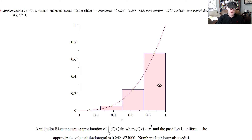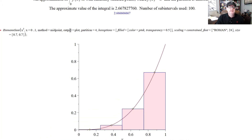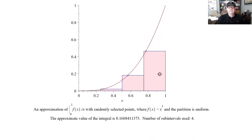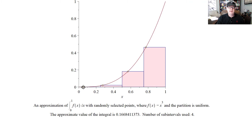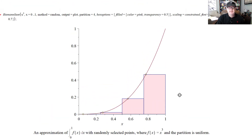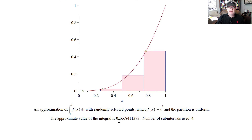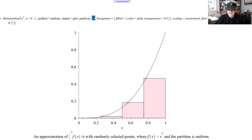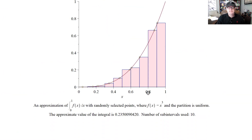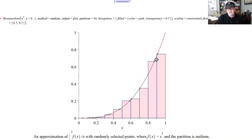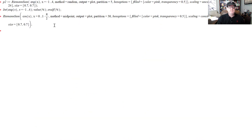For x³, the antiderivative is x⁴/4, so the true value from 0 to 1 is 1/4 = 0.25. We're already pretty close with midpoints. With 4 rectangles and random sampling, the value is pretty far off 0.25 — you can't even see the first rectangle it's so small. But with 10 rectangles and random sampling, we're not too far off. You can pick any point in each interval — this is pictorially what's going on with the Riemann sum. Let me give you one last one: cosine.